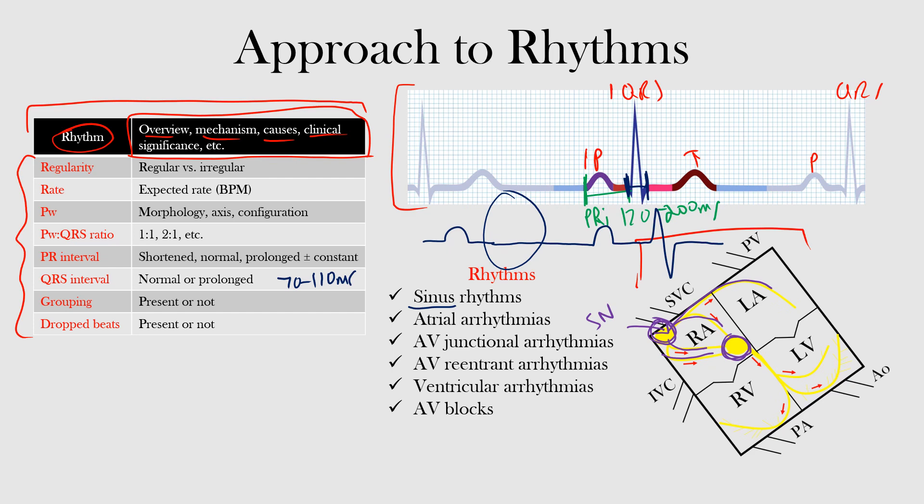At our AV node we will talk about AV junctional rhythms that also include the HIS bundle. We'll also talk about AV reentrant and AV nodal reentrant arrhythmias. The atrial arrhythmias happen in the atria - here's our right atrium and left atrium. From sinus node to the atrial arrhythmias to the AV junctional arrhythmias to the AV reentrant arrhythmias where we can have some pathways connecting the atria to the ventricles.